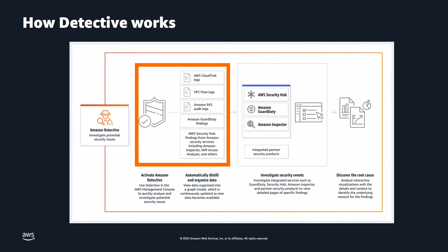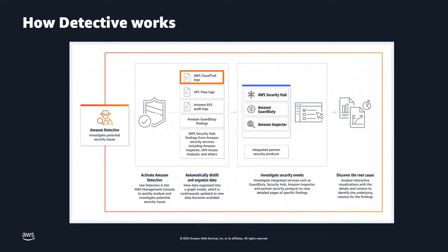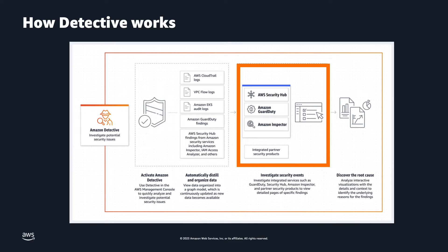Once enabled, Amazon Detective automatically extracts time-based events such as login attempts, API calls, and network traffic from AWS CloudTrail, Amazon VPC Flow Logs, Amazon EKS Audit Logs, Amazon GuardDuty Findings, and AWS Security Hub Findings. From these events, Detective uses machine learning and visualization to create a unified interactive view of your resource behaviors and the interactions between them over time.